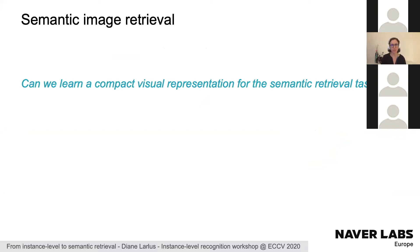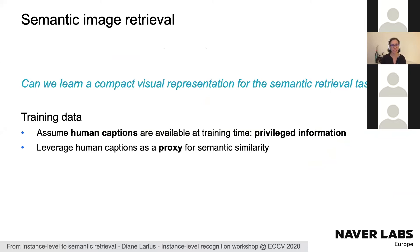In practice, it's not realistic to assume we have captions at deployment. So the question becomes: can we learn a purely visual, compact representation that is good for semantic retrieval? We decided that since we have captions at train time, we could use them as privileged information and leverage them as a proxy for semantic similarity.